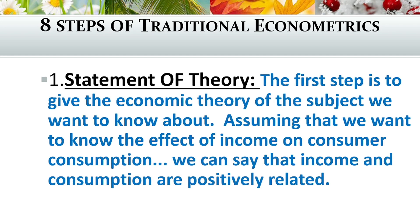Now we will discuss the eight steps of traditional econometrics. The first step is statement of theory. The first step is to state the economic theory of the subject we want to study. Assuming that we want to know the effect of income on consumer consumption, we can say that income and consumption are positively related.